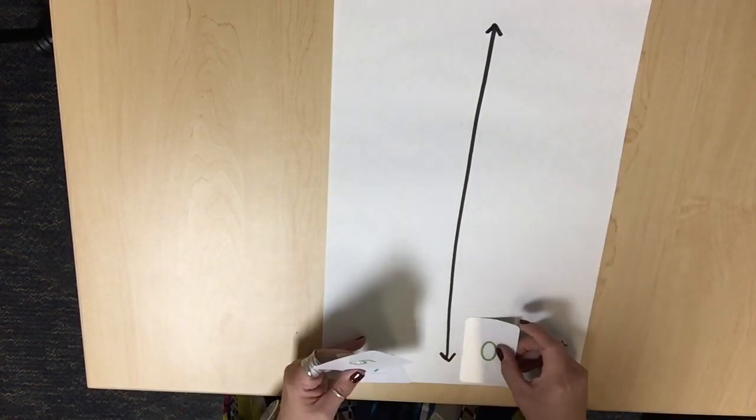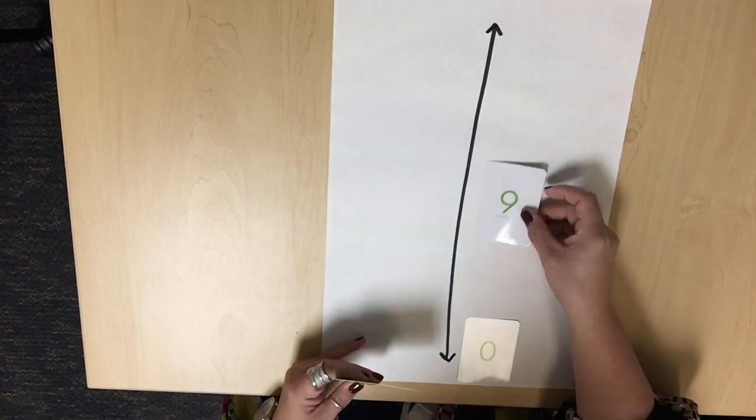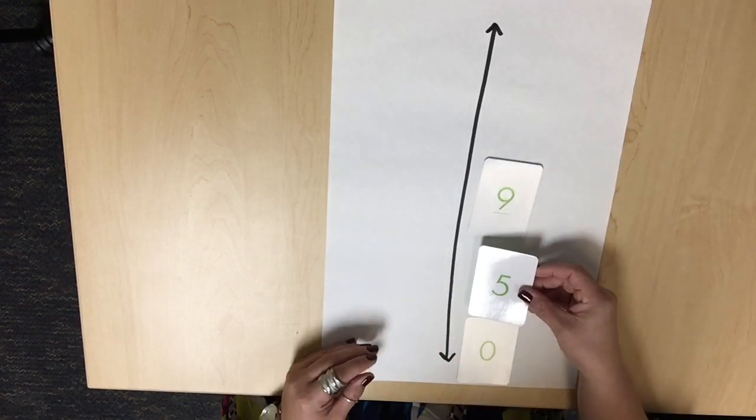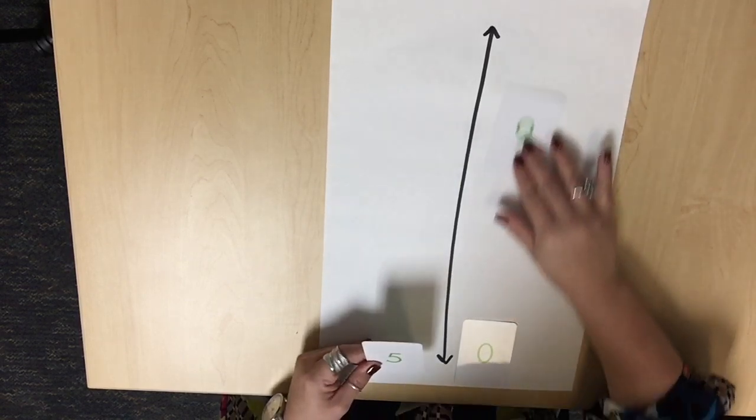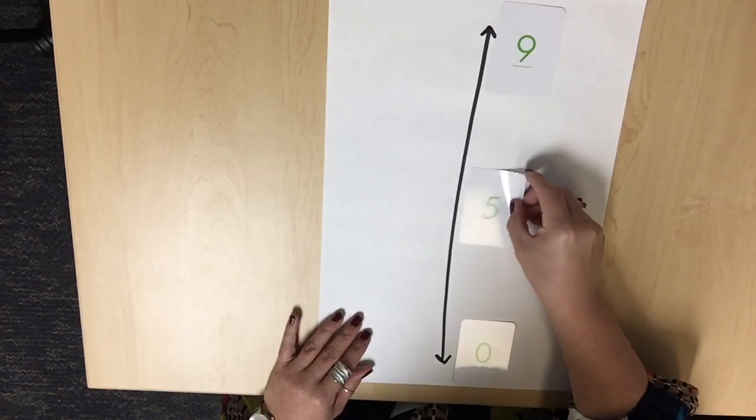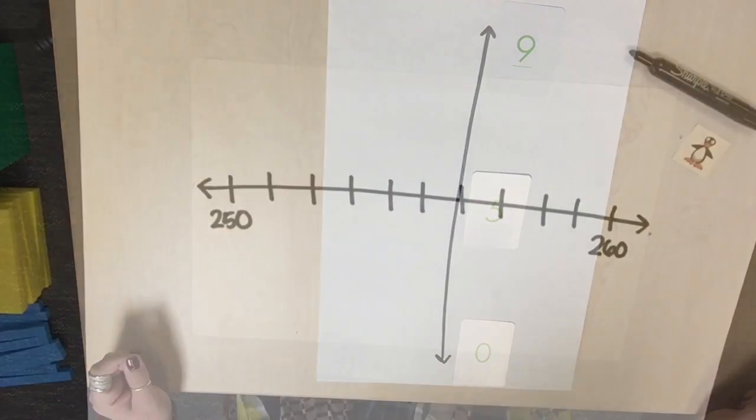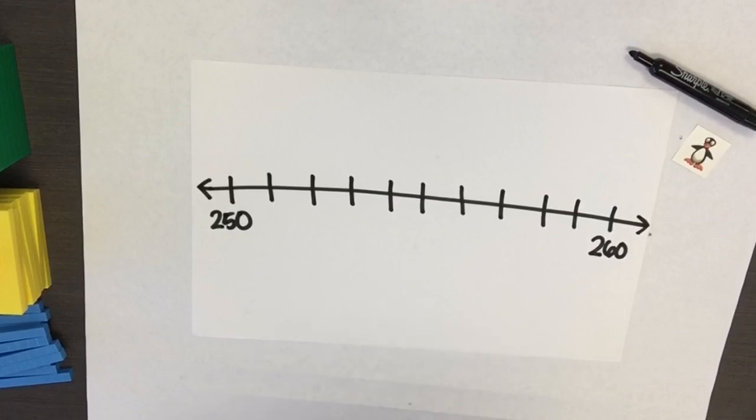Same thing when I show a vertical representation of my number line. If I put my 0 here and my 9 here to place my 5, the location of my 9 has to change.